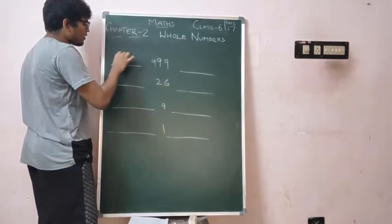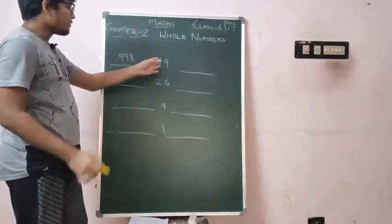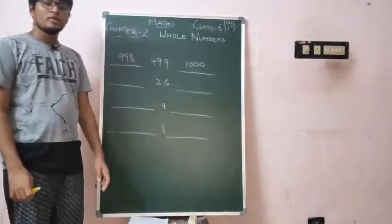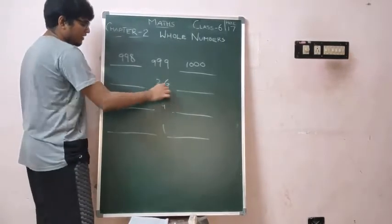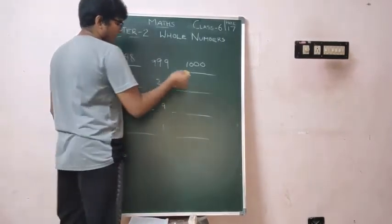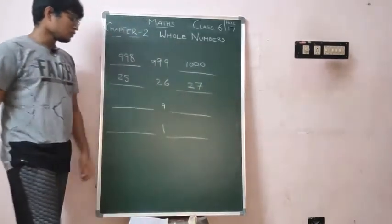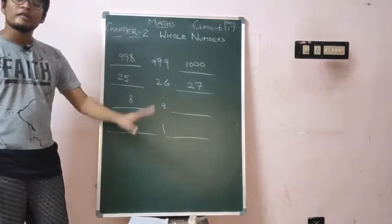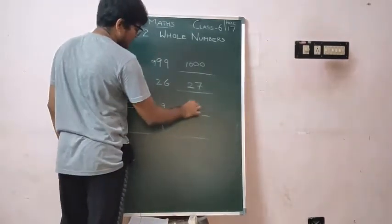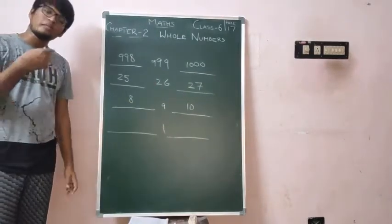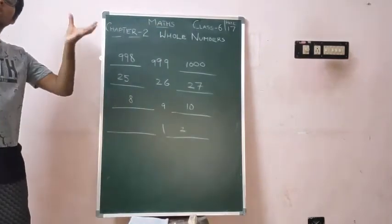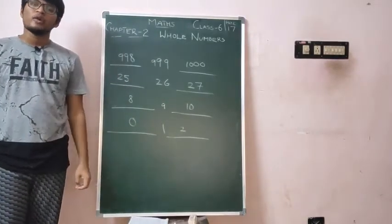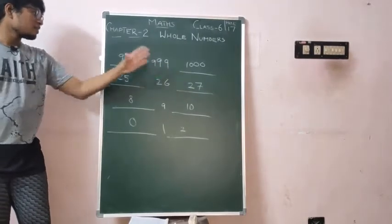So 999 minus 1 gives the predecessor, which is 998. And 999 plus 1 gives the successor, which is 1000. For 26: predecessor is 26 minus 1, which is 25; and successor is 26 plus 1, which is 27. For 9: predecessor is 9 minus 1, which is 8; and successor is 9 plus 1, which is 10. For 1: successor is 1 plus 1, which is 2; and predecessor is 1 minus 1, which is 0. These are some examples of finding successor and predecessor.